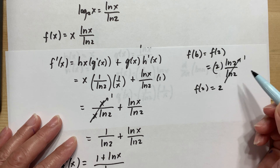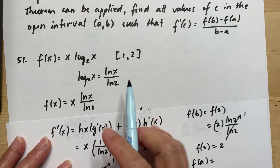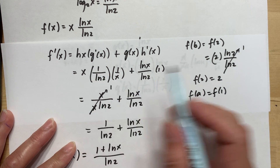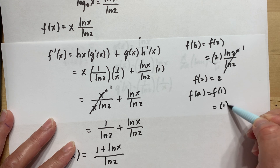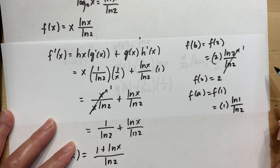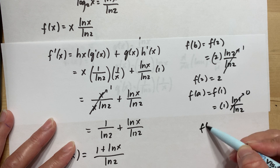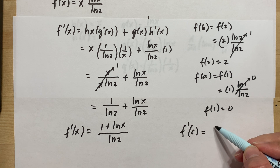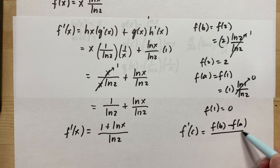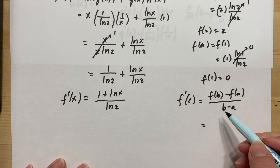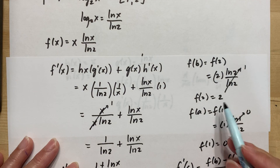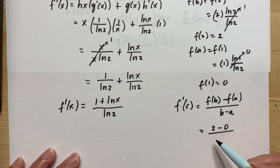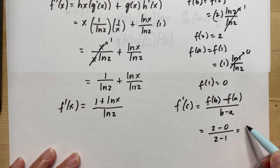Now for F(A), where A = 1: substituting x = 1 into x·ln(x)/ln(2) gives 1·ln(1)/ln(2). Since ln(1) = 0, F(1) = 0. Applying the formula, the slope equals F(B) − F(A) over B − A, which is 2 − 0 over 2 − 1, equal to 2.